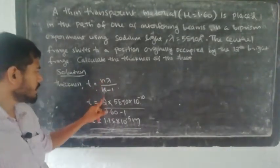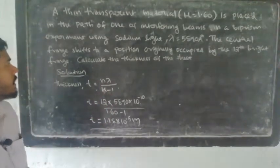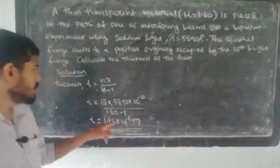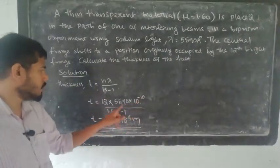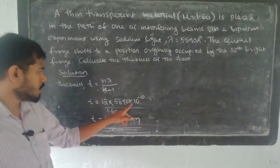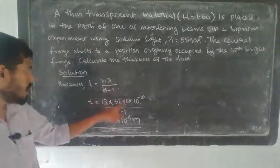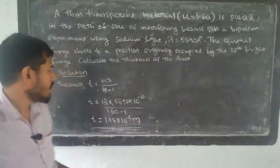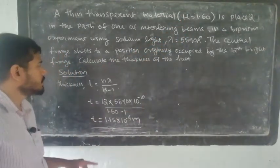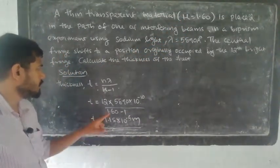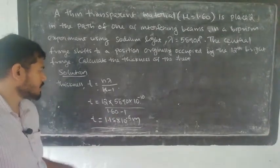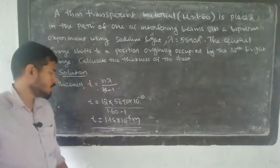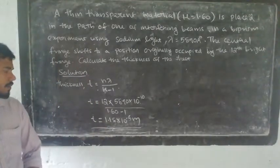Number of fringes shifted is 12. So 12 equals thickness t times (mu minus 1) divided by lambda. Lambda is 5890 Angstroms, which is 5890 into 10 raised to minus 10 meters. Refractive index mu is 1.60, so mu minus 1 is 0.60. Solving, the thickness t is equal to 1.18 into 10 raised to minus 5 meters.